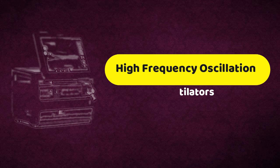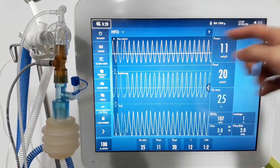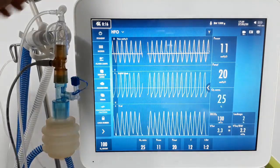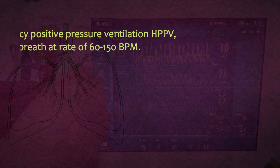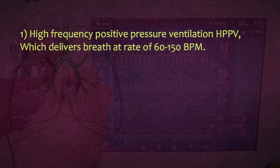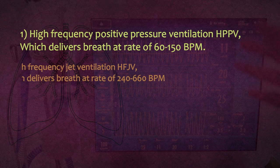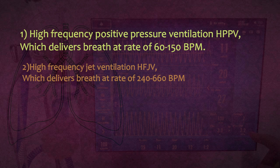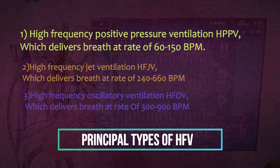The next classification is the high-frequency oscillation ventilator. HFV is a new technique of ventilation that uses respiratory rates greatly exceeding normal breathing. There are three principal types of HFV: (1) High Frequency Positive Pressure Ventilation (HPPV), which delivers breaths at 60 to 150 BPM; (2) High Frequency Jet Ventilation (HFJV), which delivers breaths at 240 to 660 BPM; and (3) High Frequency Oscillatory Ventilation (HFOV), which delivers breaths at 300 to 900 BPM.